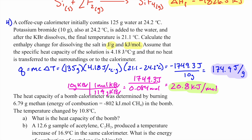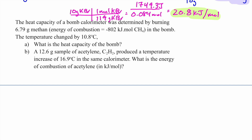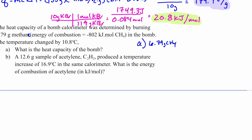The final problem: the heat capacity of a bomb calorimeter was determined by burning 6.79 grams of methane. The energy of combustion of methane is 802 kJ/mol. The temperature change observed was 10.8°C. Part a asks for the heat capacity of the bomb. Part b involves a different substance — we'll get to that after solving part a.